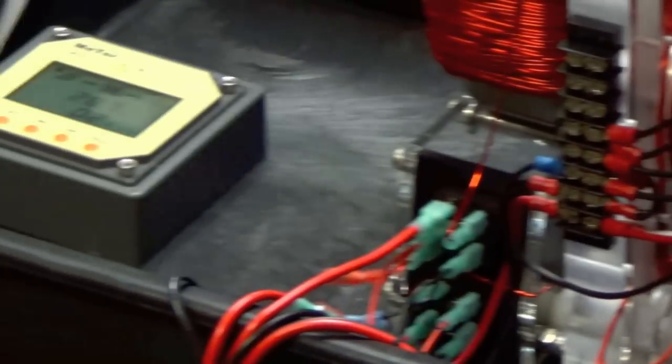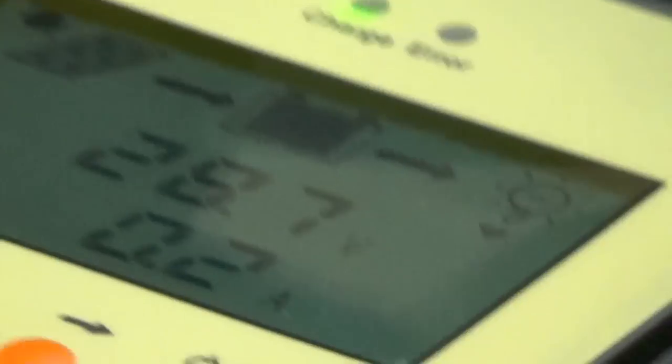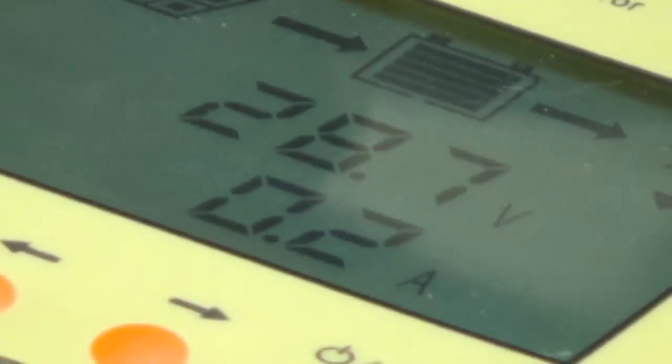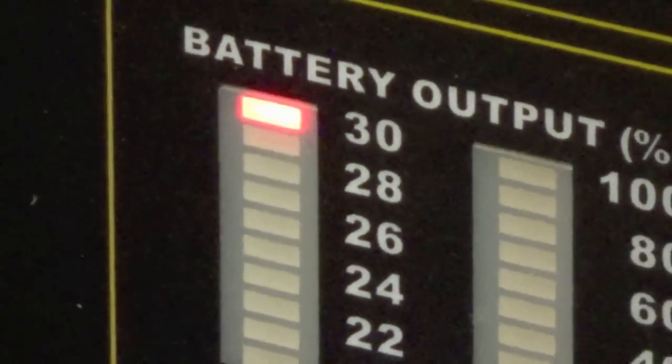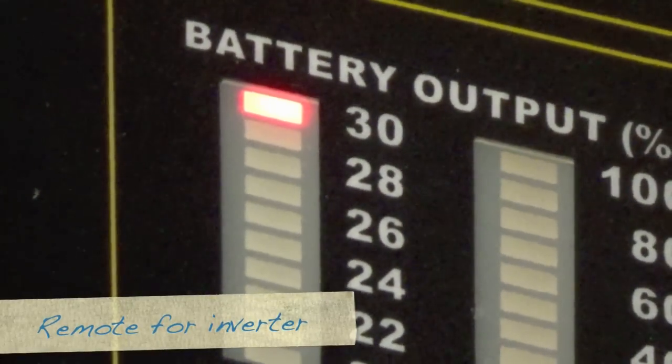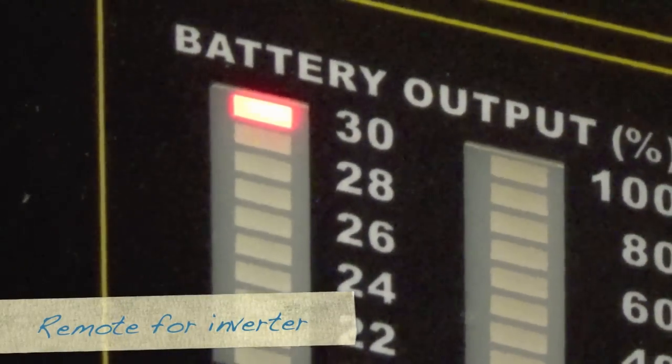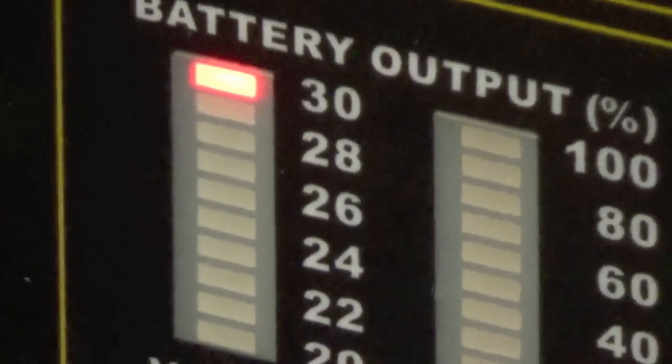And over here, the other bank from the solar is 28 point, 29 volts. And this only goes to 30. So the light turns red from green to red when you're at the high level like that.